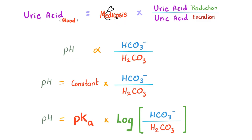Consider a totally different subject — pH — but the same concept prevails. pH is proportional to HCO3 (bicarbonate, the base) over H2CO3 (carbonic acid). So it's base over acid. You can replace proportional with a constant — and here that constant is pKa. Take the logarithm to get precise numbers. That's your Henderson-Hasselbalch equation — two people came up with common sense and added their names to the textbook.